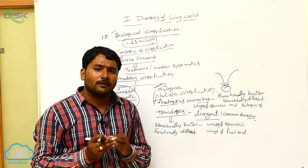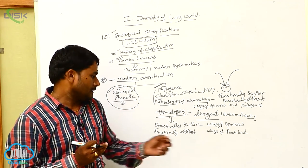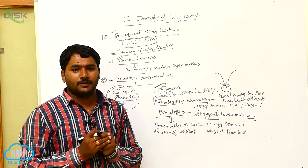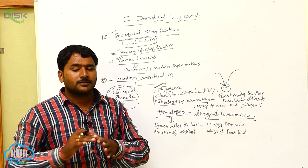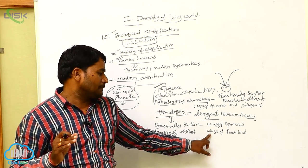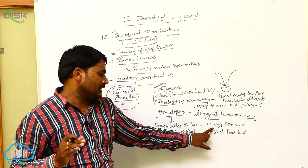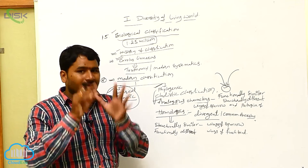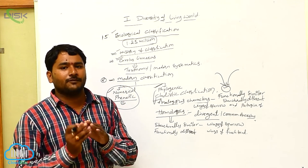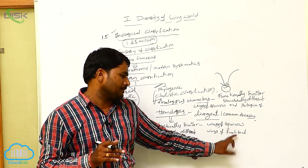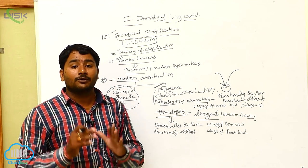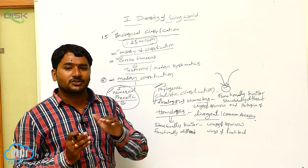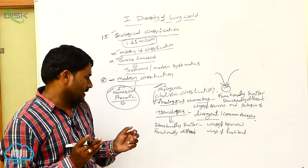For example, wings of a sparrow help in flying, whereas wings of a finch bird help in swimming — so the function is different. But if you take the anatomical structure of the wings of both birds, sparrow and finch, they are quite similar. So homologous characters are structurally similar and functionally different.